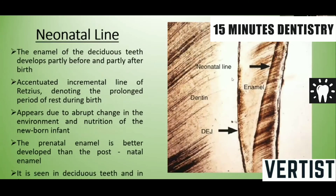The neonatal line is an accentuated incremental line of Retzius, denoting the prolonged period of rest during birth. The enamel of the deciduous teeth develops partly before and partly after birth, and the enamel formed before and after birth is separated by a darkly brownish line called the neonatal line. This appears due to the abrupt change in the environment and nutrition of the newborn infant. The prenatal enamel formed is of greater quality than the postnatal enamel.